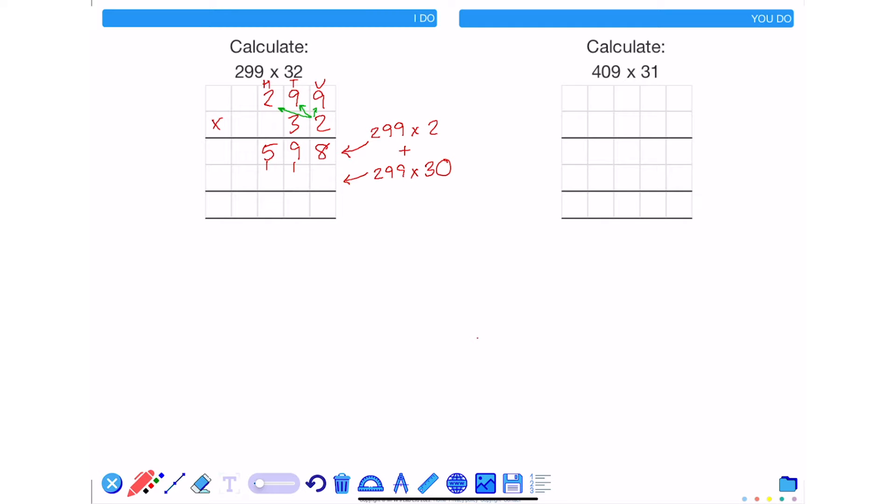The next thing I need to do is multiply 299 by 30. To compensate for the fact that the 3 I'm multiplying by is in the tens column, I'm going to put a 0 in the units column. And now like what we did before, I multiply 3 by each of the numbers in 299.